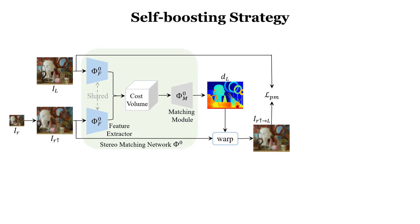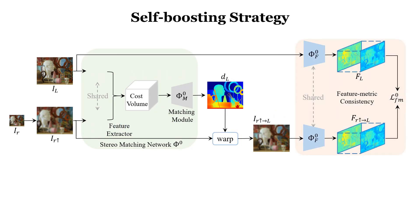To this end, we propose a self-boosting strategy to progressively boost the network. Specifically, we first use photometric loss to train a stereo matching network Φ0. Then its feature extractor formulates a feature metric loss LFM0 which is utilized to fine-tune a stereo matching network Φ1. Note that Φ1 is initialized as Φ0.